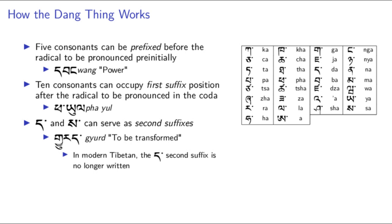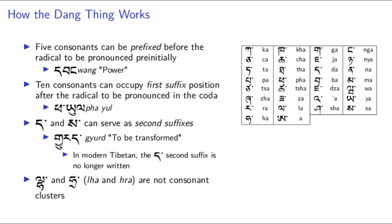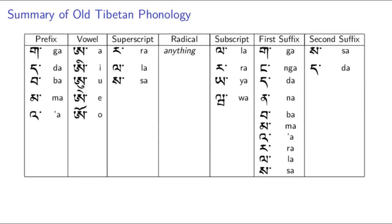There are a couple of controversial combinations though. The consonant la superscripted over ha and the combination ha with a ra subscript are potentially not actually consonant clusters. Hill claims they are voiceless counterparts to la and ra, whereas Bayer claims they are indeed clusters.